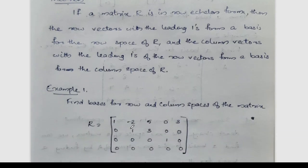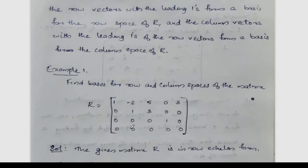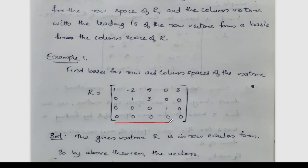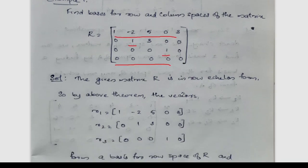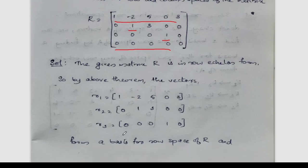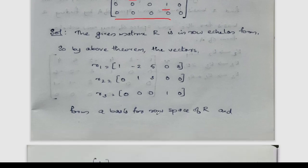Find the basis for row and column spaces of the matrix R equal to: 1, -2, 5, 0, 3; 0, 1, 3, 0, 0; 0, 0, 0, 0, 0. This is already in row echelon form. The three non-zero row vectors form a basis for the row space of R.